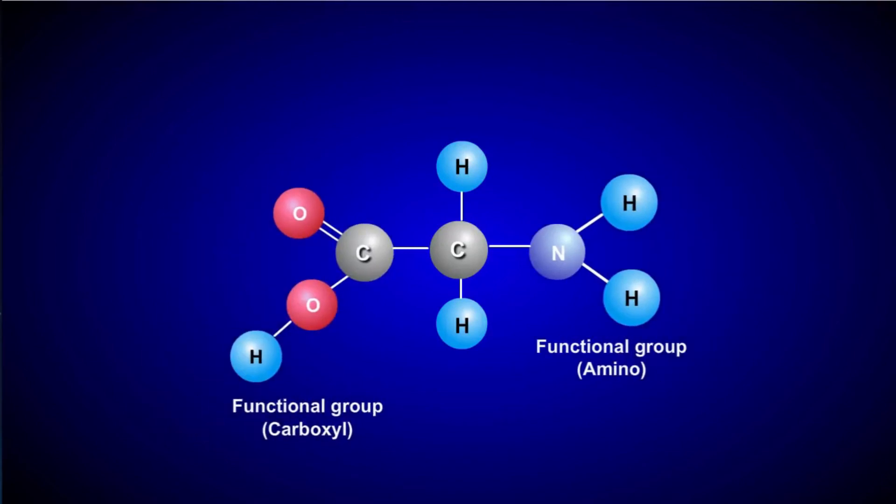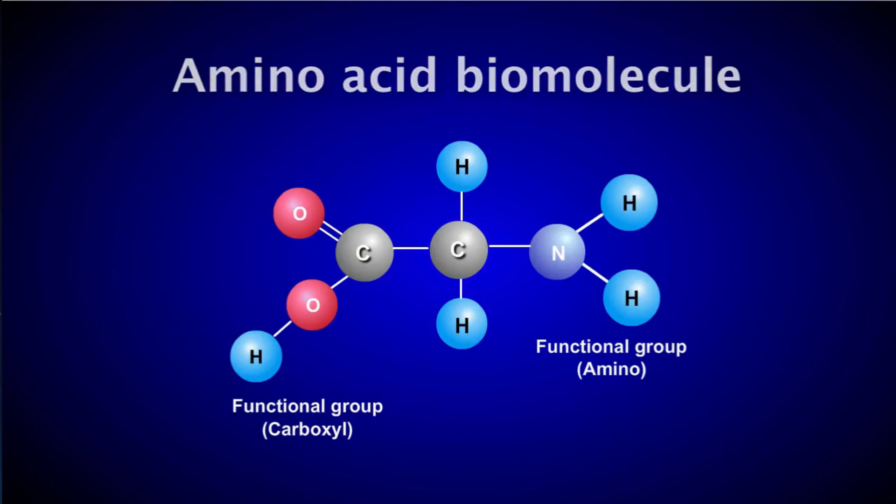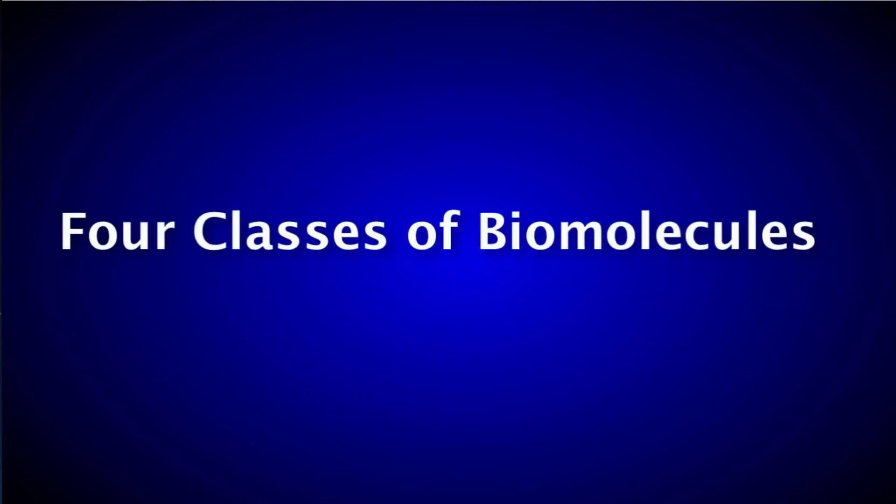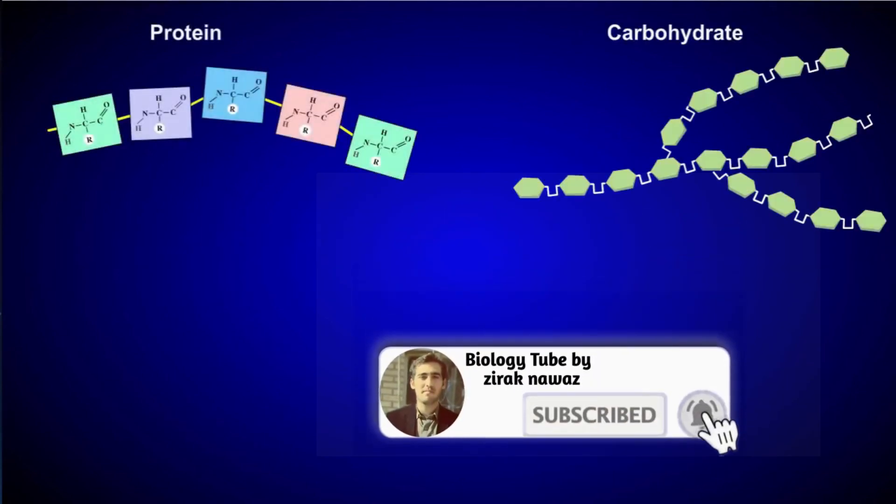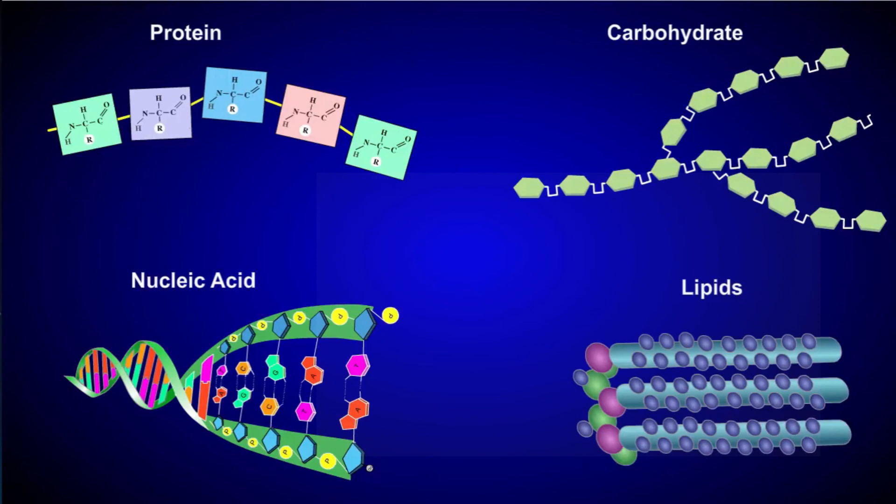When an amino group and a carboxyl group join with this carbon backbone, an amino acid biomolecule is formed. All biomolecules can be divided into four classes: proteins, carbohydrates, nucleic acids, and lipids. We'll discuss these different classes in depth in the next few tutorials.